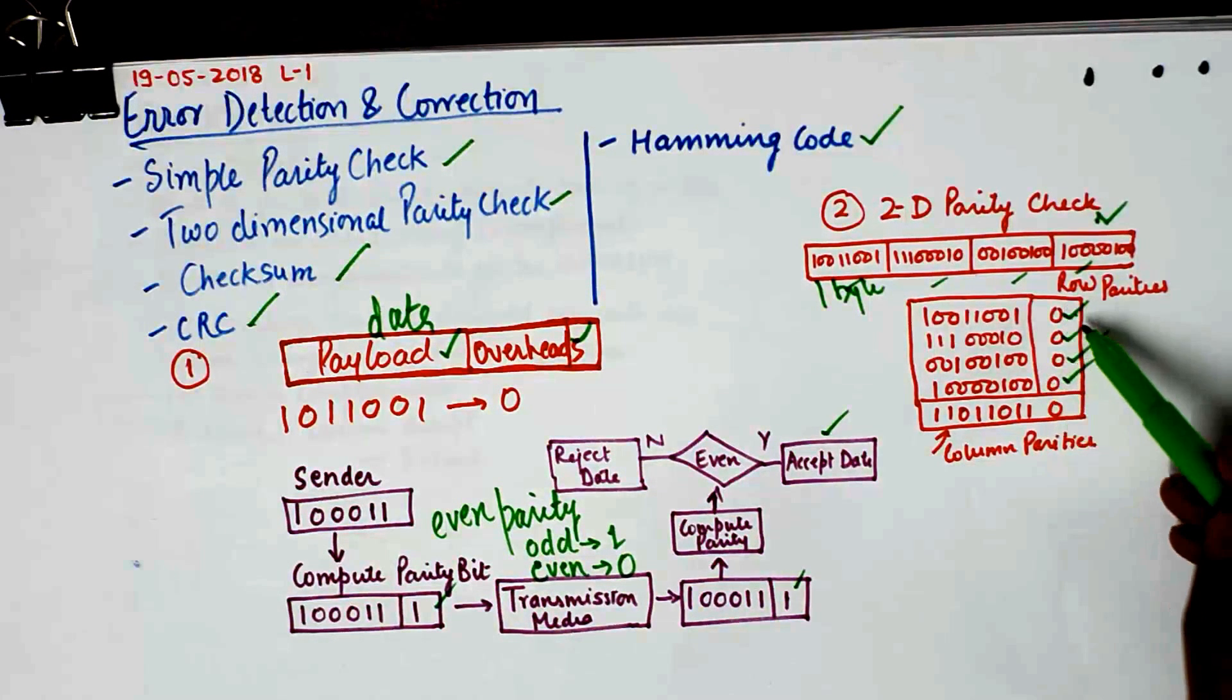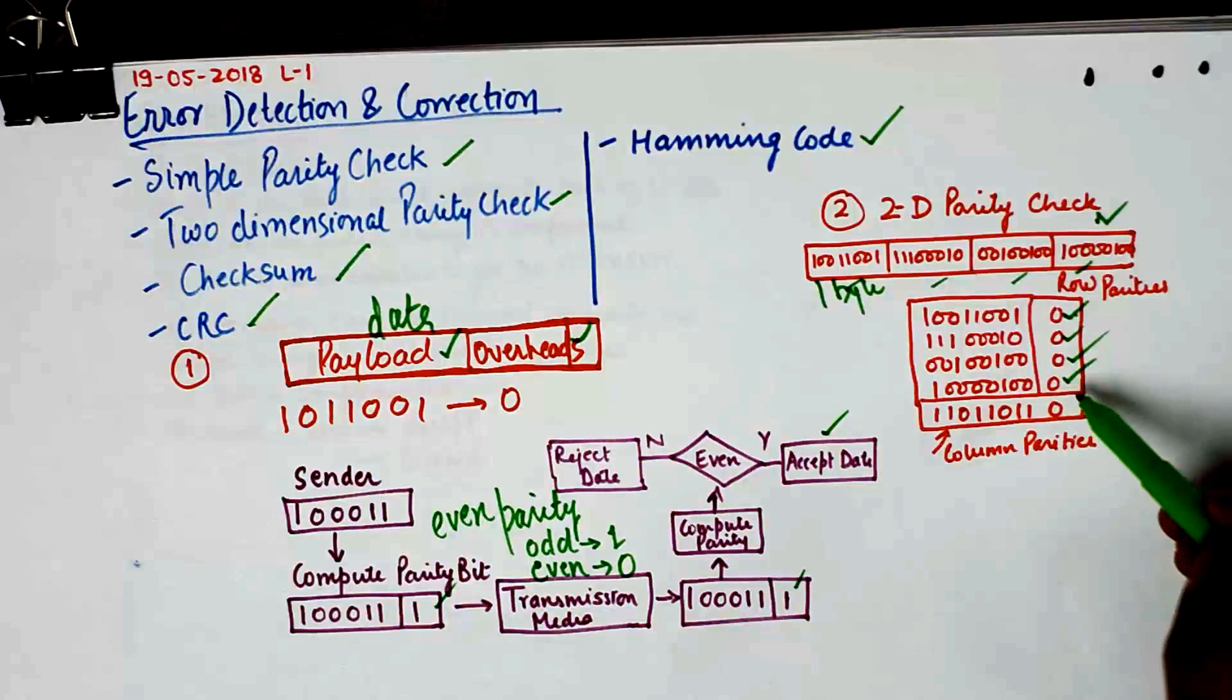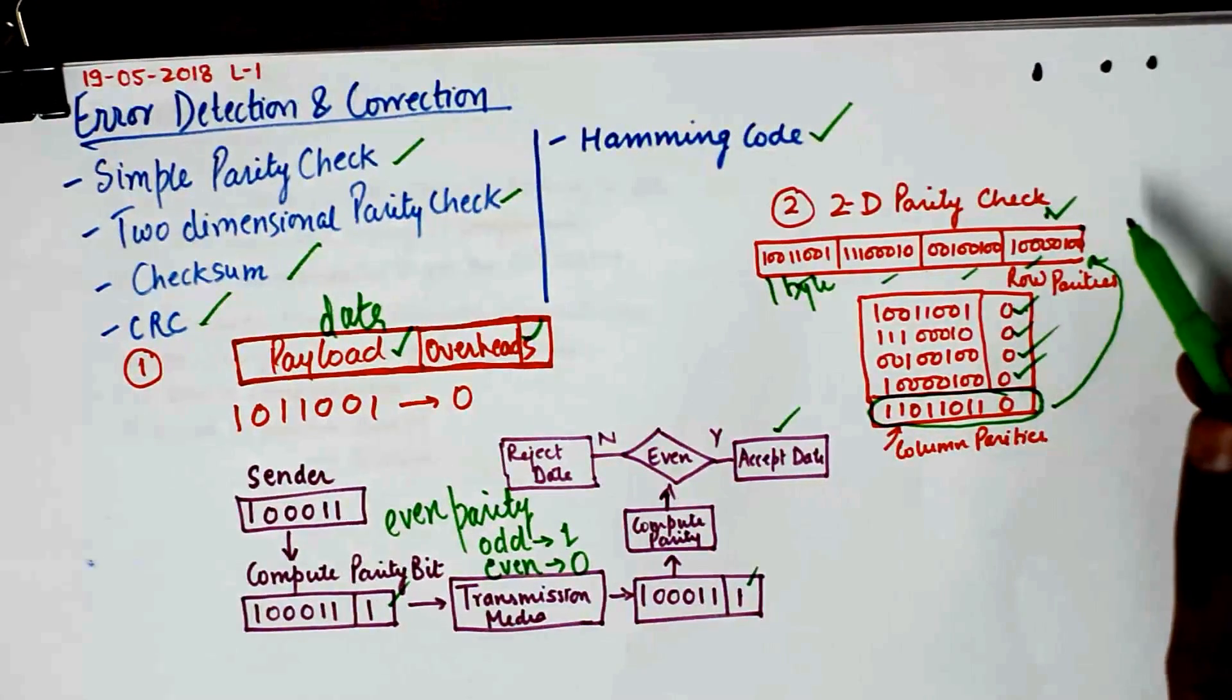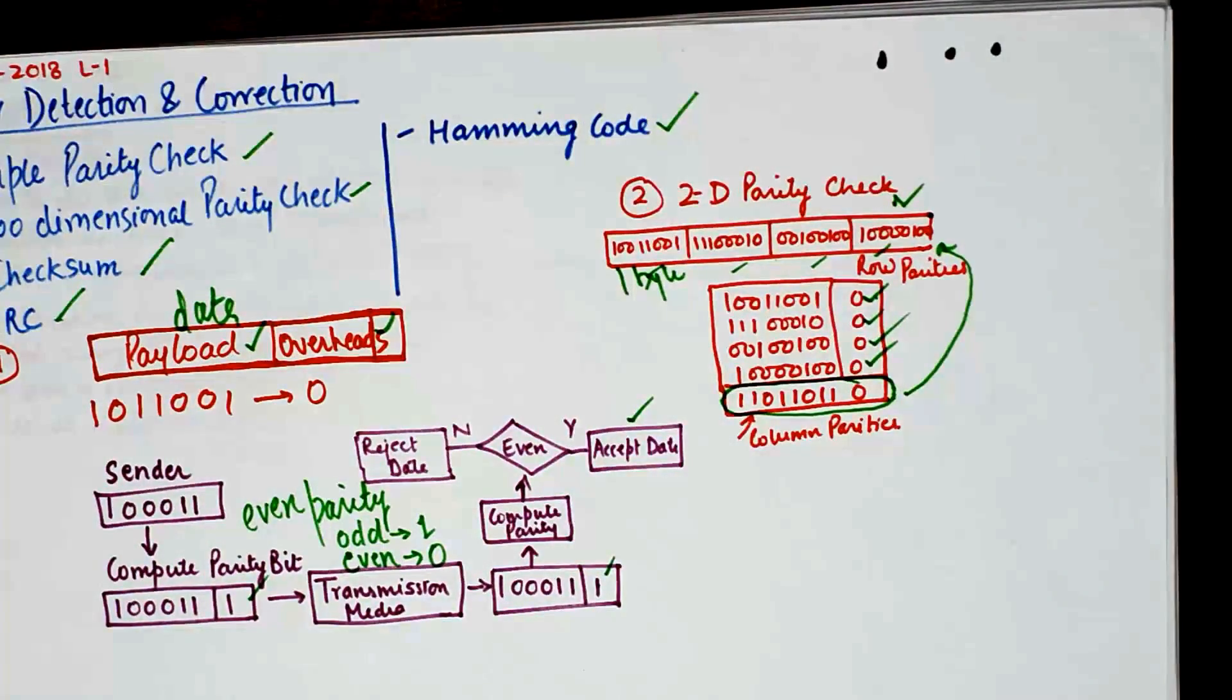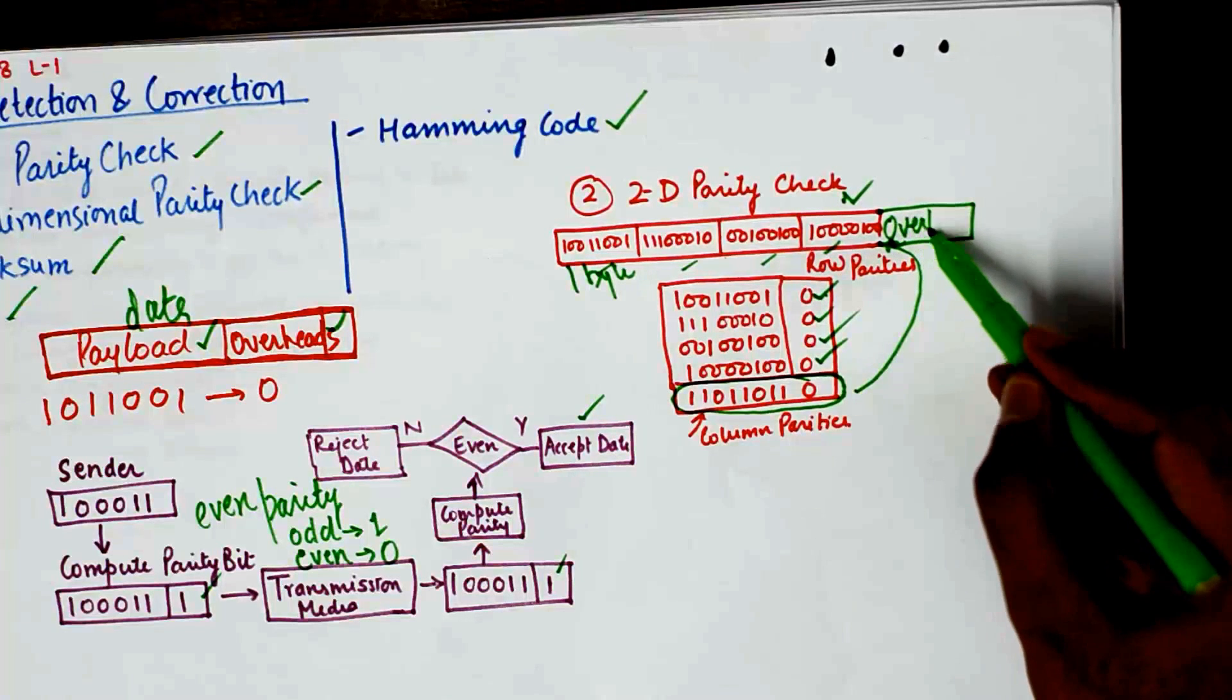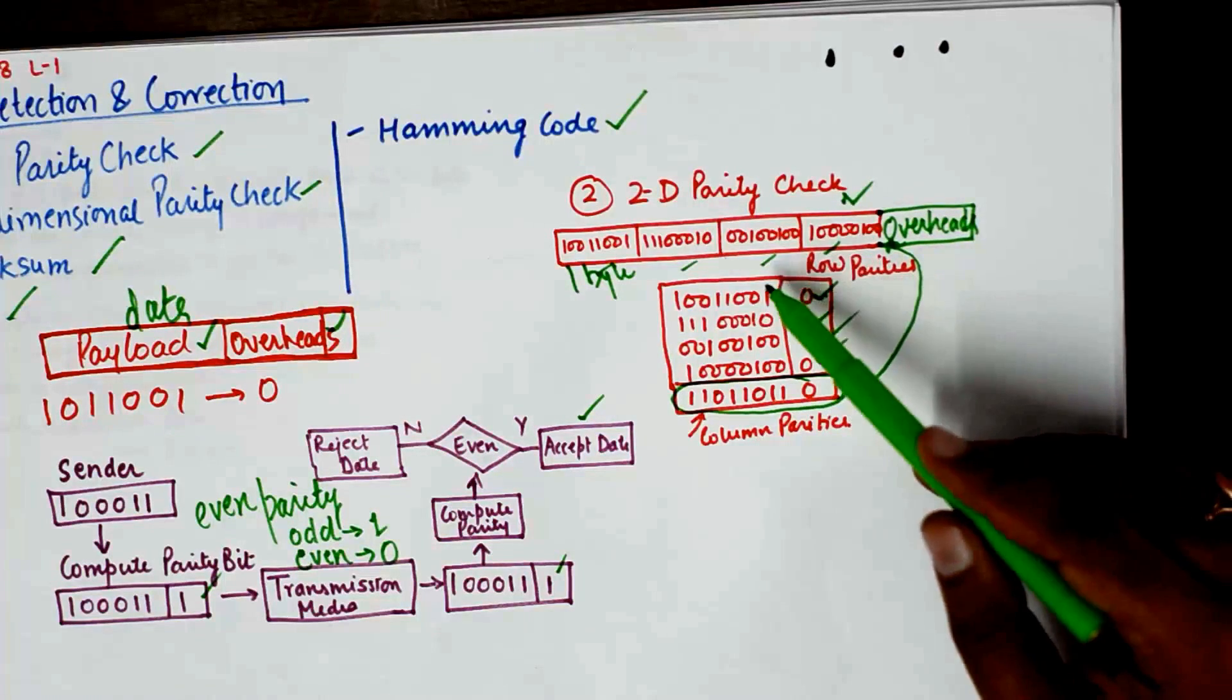Now the last column becomes the row parity column. In row parity column we do not have any one so it becomes a zero here. And this entire thing of column parities is transmitted along with the data as payload. It is transmitted along with the data which is payload as overheads. So the overhead here is a 9 bit overhead for a group of 8 bit data.